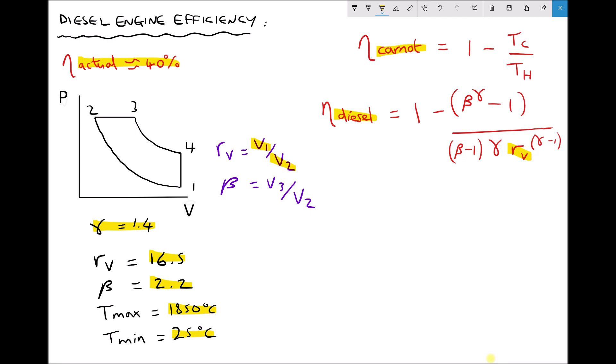Next we have the cutoff ratio beta. Now the cutoff ratio is the ratio of V3 to V2. If we refer to our PV diagram we can see that V2 is the volume of air prior to combustion and V3 is the volume of air fuel mixture after combustion.